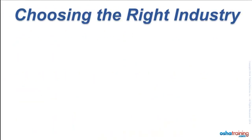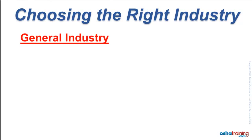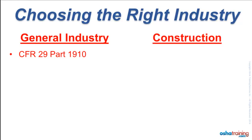The OSHA training courses cover one of two major industry categories. The first one is called general industry. These training courses cover the OSHA standards that appear in Part 1910 of the Code of Federal Regulations. There are also OSHA training courses that cover the construction industry, which is regulated by Part 1926 of the Code of Federal Regulations.